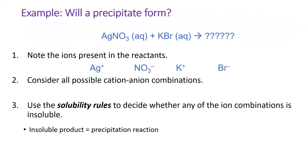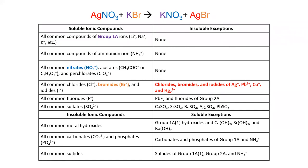First, we separate the aqueous substances into their ions: silver, nitrate, potassium, and bromide. Then we list all possible combinations of cation and anion. The new combinations for this mixture are potassium nitrate and silver bromide. Consulting our solubility rules, I find each of the compounds on this table.